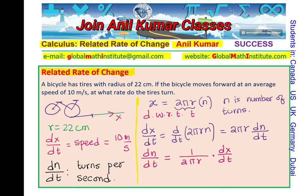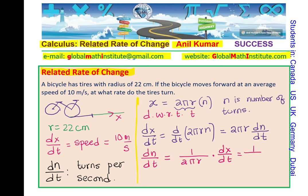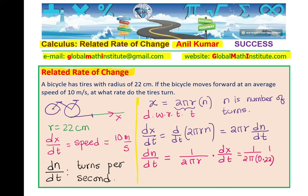Since we are given that radius is 22 centimeters and speed is 10 meters per second, we need to convert to the same units. We convert the radius to 0.22 meters. Meters and meters will cancel, so the units of dn/dt will be per second, which makes sense.